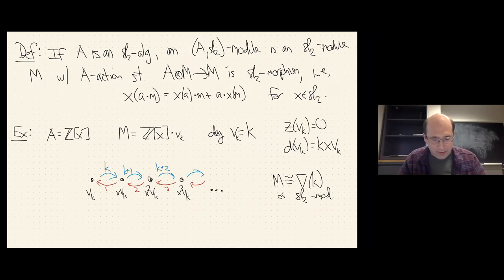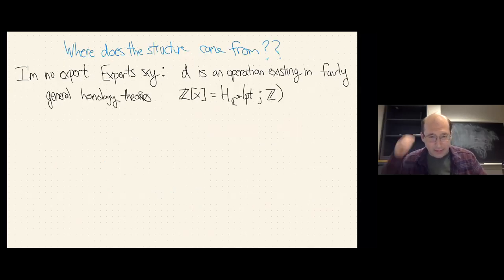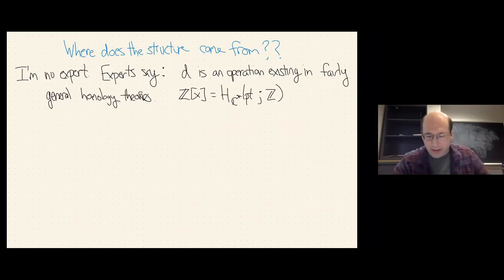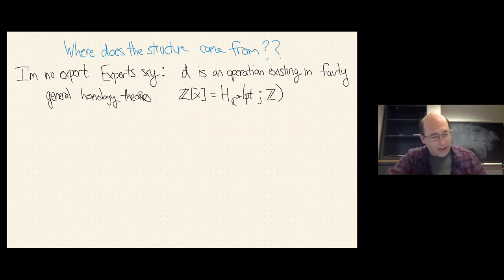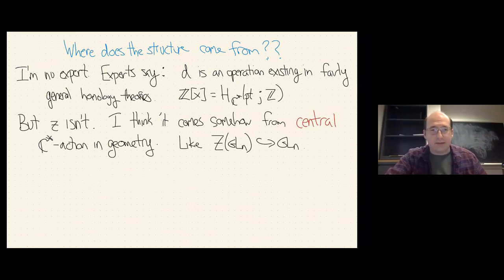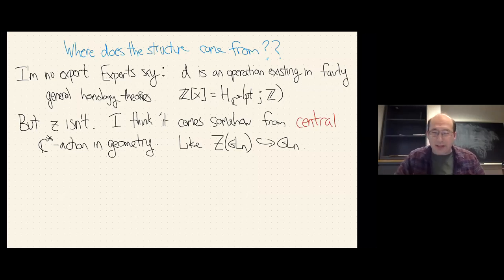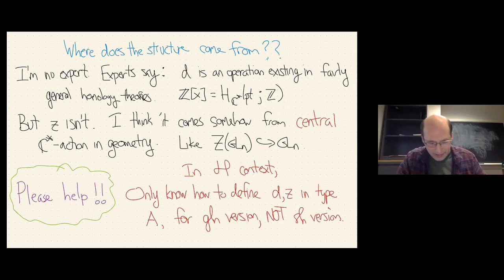The real question is: where does this come from? I've asked experts and they tell me that if you think of the polynomial ring in one variable as the equivariant homology of a point, the D operator is something like a homological operator, something like Steenrod squares — it should make sense coming from some kind of homology theory. But Z, the lowering operator, lowers degree, and things of negative degree are typically not homological operations. I've been trying to figure out where this comes from geometrically. I really think it comes from the existence of a central C*-action. I can justify this, and if you're interested in the geometry, please talk to me.